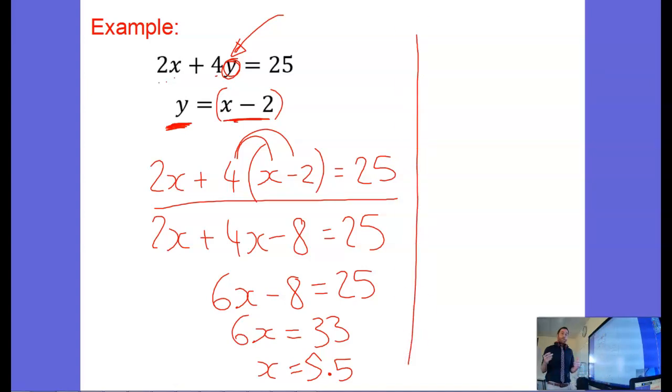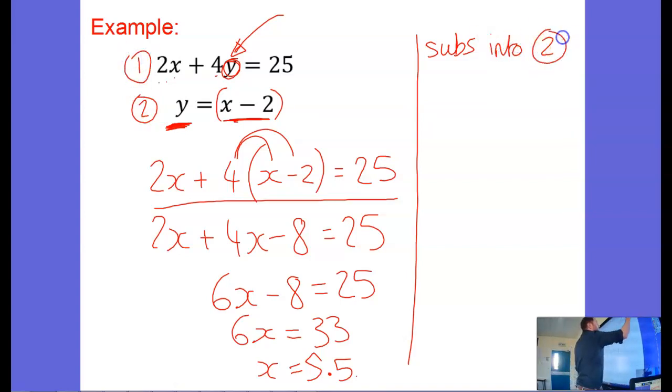Now I'm not finished, because in a simultaneous equation I need to find x and y. So my last step is to substitute what I've got here, x is 5.5, into one of these equations. I'm going to substitute it into equation two. The reason being, the smaller numbers, it's going to be easier.